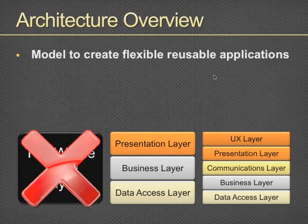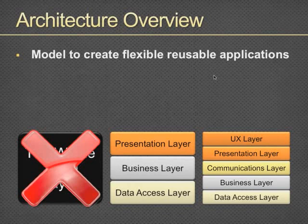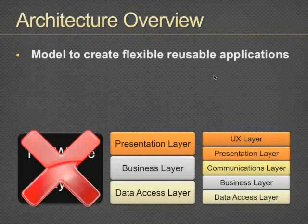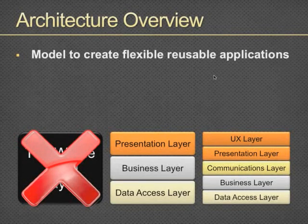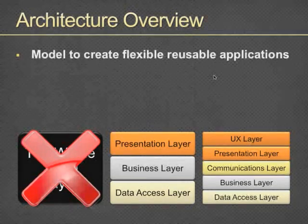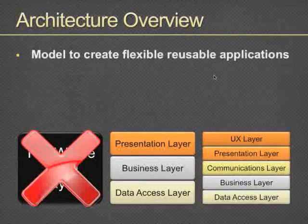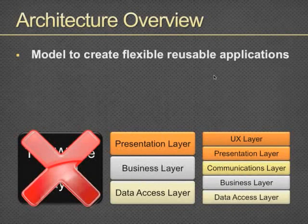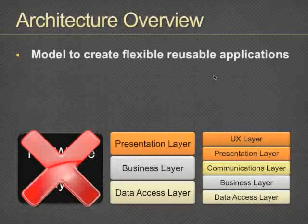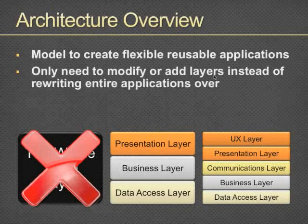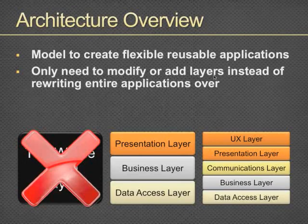This is the model to create flexible, reusable applications. If you architect like this, your company and your product will be much better — much easier to maintain, and able to respond to changes faster. What do we want? We want to write good code that isn't buggy. What do managers want? Feature, feature, feature. If you don't do stuff like this, delivering features becomes very slow. You don't need to modify other layers or rewrite the entire application.